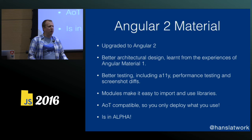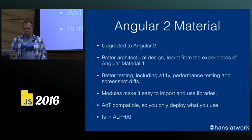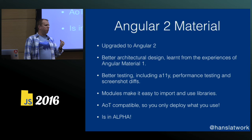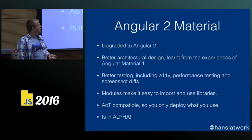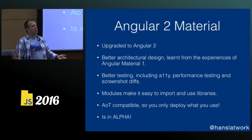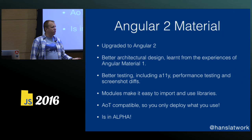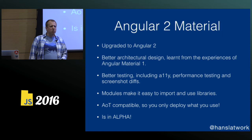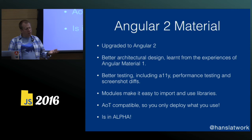With Angular 2 RC5 came ng-modules, which really simplified the way you use libraries in Angular 2. It makes it super easy to import and use libraries. Angular 2 Material being our biggest first-party library is a good example of how we can really improve your workflow. If you're a library builder, we can really help you, because we're building a huge library and we want to make sure it's as simple to build a library as it is to build an application with Angular. It's fully AOT compatible, so you only deploy what you use. It's currently in alpha.